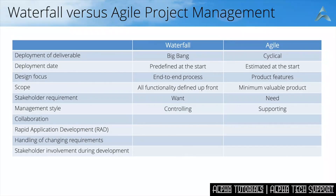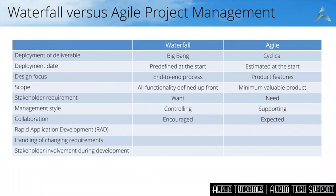An interesting consequence of Waterfall being a big bang with a date defined far in the future, milestones calculated backwards, and all functionality defined up front — that all makes management very controlling because they want to hit those milestones. With Agile it's a totally different management style: you want the team to make progress, and if the team has a particular hurdle and can't progress, it is the task of management to take away those hurdles, so they are more supporting. There is also a slight difference in collaboration: in Waterfall, collaboration is encouraged, which is basically the lowest level, while with Agile, collaboration is expected.